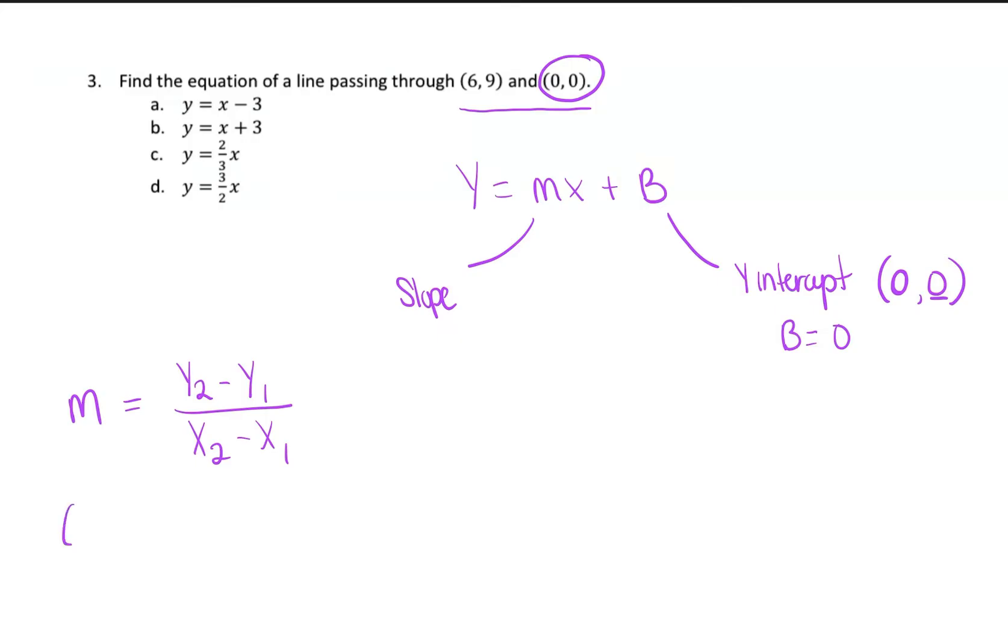So we have two points. We have (0, 0) and we have (6, 9). So this point is going to be our ones. And then this point is going to be our twos. So this is going to be x1, y1. And then this is going to be x2, y2. Now that we have all of our points labeled, we just have to enter it into the equation.